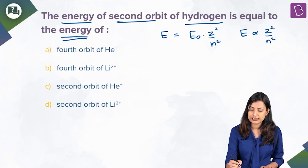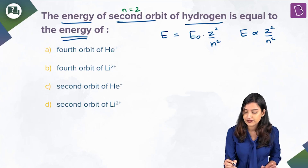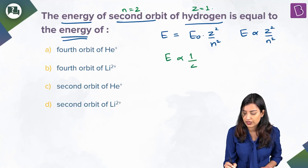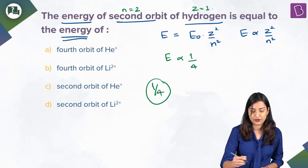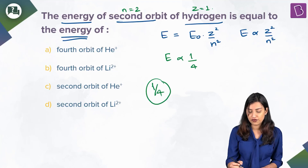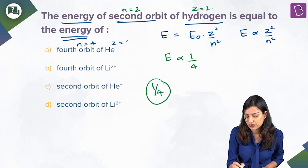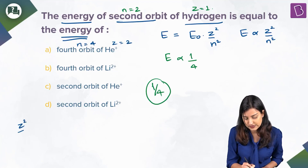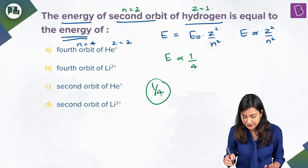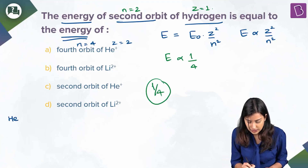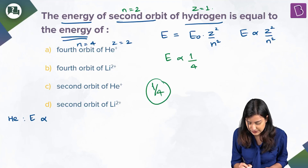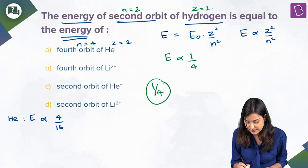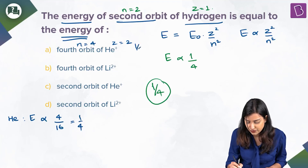For the second orbit of hydrogen: N = 2, Z = 1, so E is proportional to 1/2², which is 1/4. That is the ratio to match. Option A is the fourth orbit of He⁺, so N = 4, Z = 2. Energy is proportional to Z²/N² = 4/16 = 1/4. This is already matching.